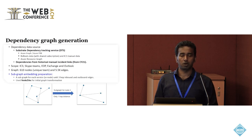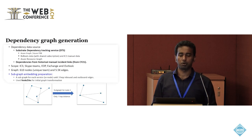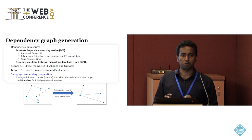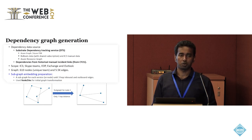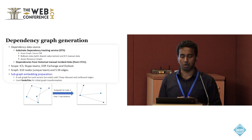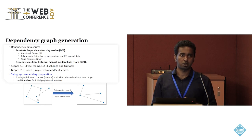To create the local view for each service, we first generate a subgraph for each unique service by considering a three-hop neighborhood distance, and then we use a node2vec technique for the initial graph transformation.